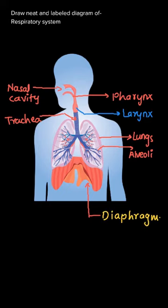The next part is the diaphragm. The diaphragm is the muscular portion and it helps the lungs to open and close so that air enters inside and air moves outside the body during respiration or breathing.